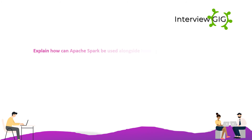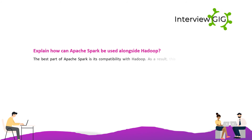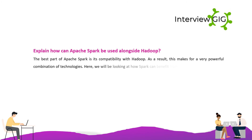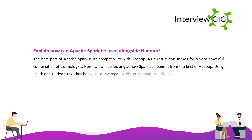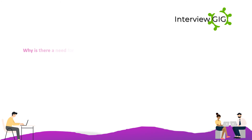Explain how Apache Spark can be used alongside Hadoop. The best part of Apache Spark is its compatibility with Hadoop, making for a very powerful combination of technologies. Using Spark and Hadoop together helps leverage Spark's processing power while utilizing the best of Hadoop's HDFS and YARN.